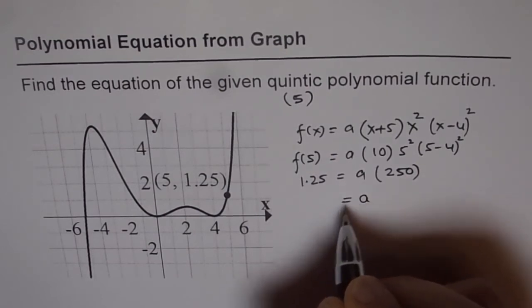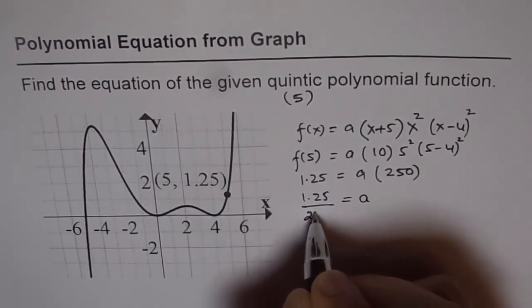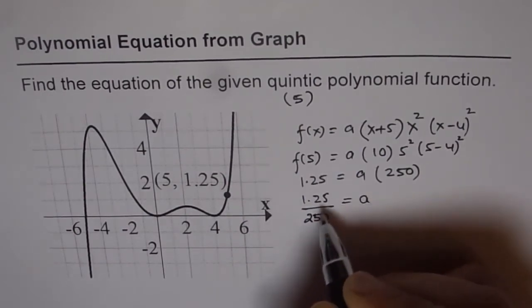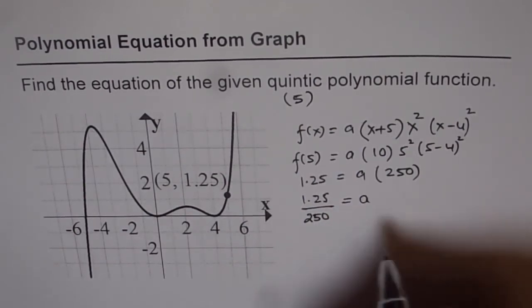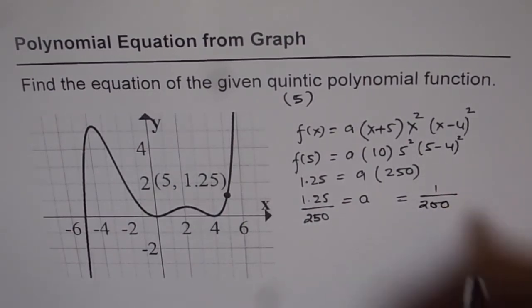So a is equals to 1.25 divided by 250. So that is like 1 over 200. So we get value of a as 1 over 200. So that is the value of a.